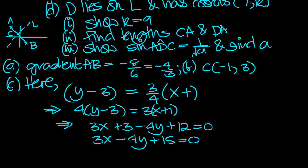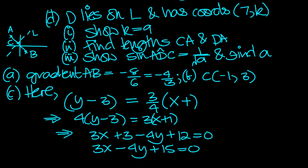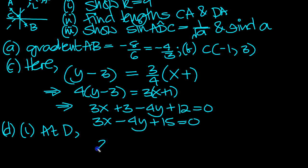So D lies on L and has coordinates (7, k). So D's up here, and it's got (7, k). Show that k is 9. So this is part D, part 1. At D, it goes through this line here, and we know the x value is 7 and the y value is k.